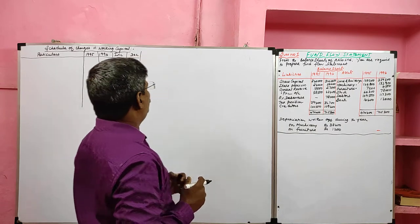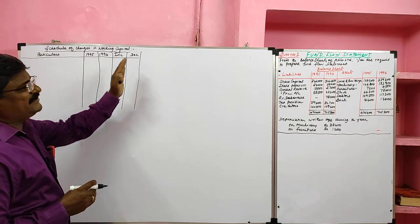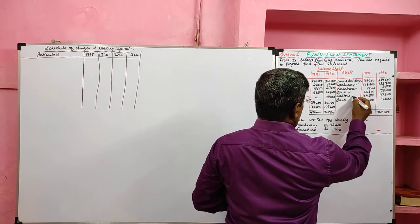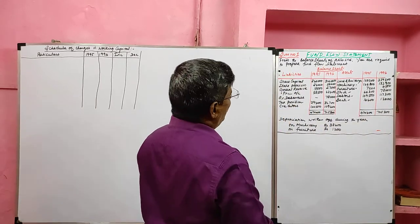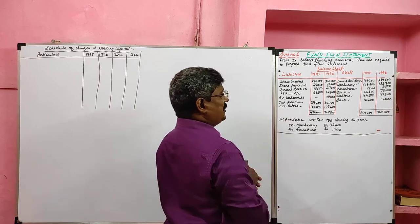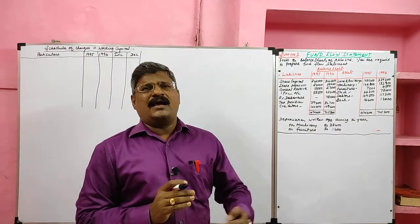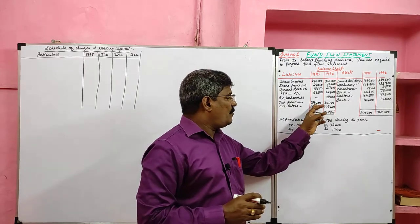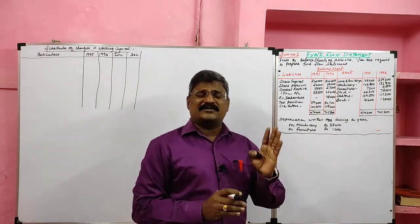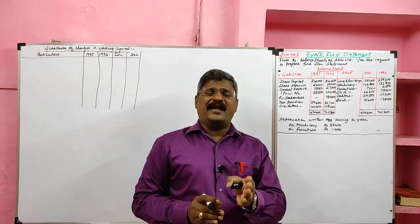We are going to prepare the schedule of changes in working capital. The format has particulars, 1995, 1996, increase in working capital, and decrease in working capital. We take current assets — stock, debtors, bank — and current liabilities such as creditors. Tax provision is not listed under current liabilities, so we treat it as a long-term liability. The opening balance of tax provision goes to the application side; the closing balance goes to the adjusted profit and loss account debit side.